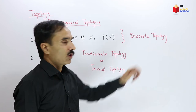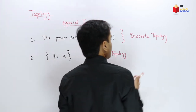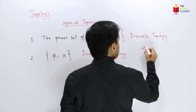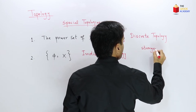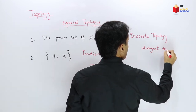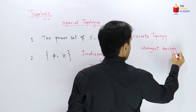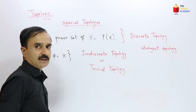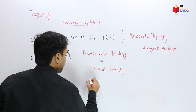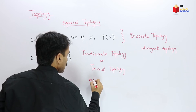The discrete topology is the strongest topology, and the indiscrete topology is called the weakest topology.